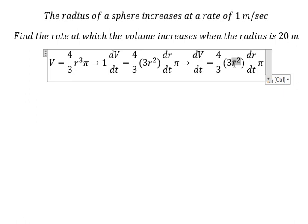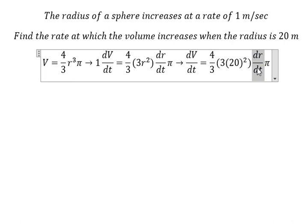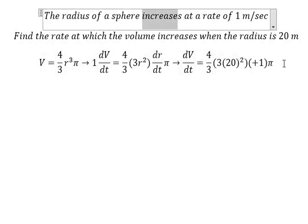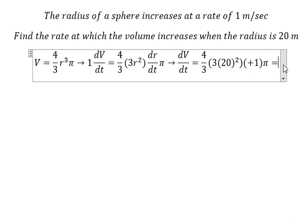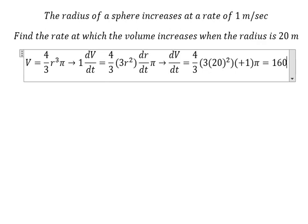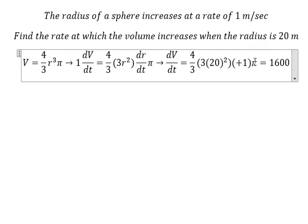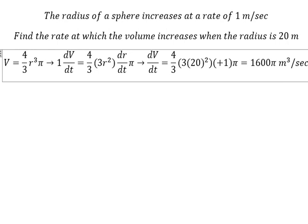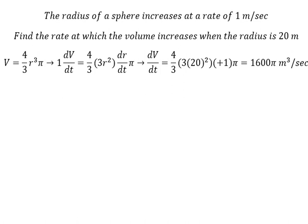We're given that r = 20. dr/dt is positive 1 because it's increasing. Now we calculate: dV/dt = 4π(20)²(1) = 1600π cubic meters per second. This means the volume increases by this value.